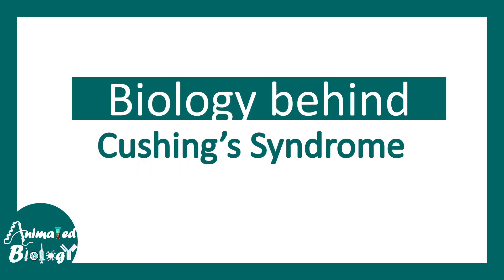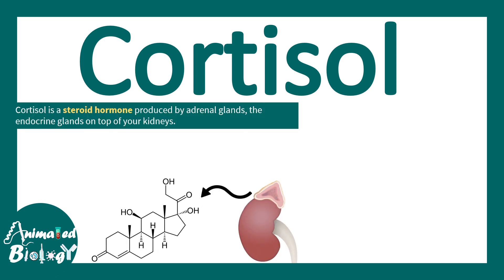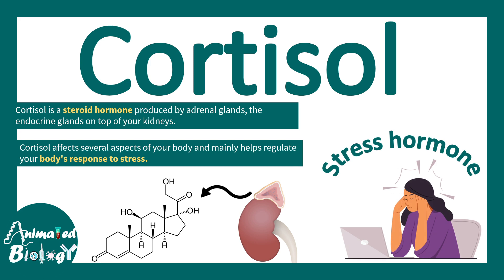Let's understand the biology behind Cushing syndrome. The main player is cortisol, a steroid hormone produced by the adrenal glands — the small cap-like structures sitting on top of your kidneys. The main function of cortisol is to regulate the body's response to stress.